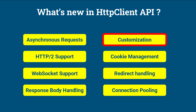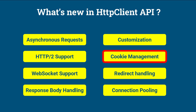Customization: The HTTP Client API allows you to customize various aspects of the HTTP request, such as setting headers, timeouts, authentication, and proxy settings. Cookie Management: The HTTP Client API includes built-in support for managing cookies, allowing you to send and receive cookies as part of HTTP requests and responses.